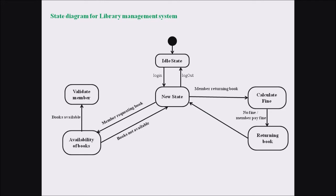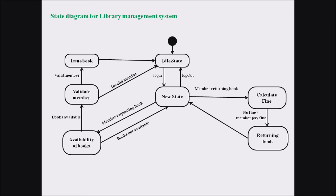If the books are available, the person moves to the validate member state. If the member is valid, they can borrow the book. If the person has invalid membership, the process ends by moving towards the idle state. If the member is valid, they move to the issue book state, and finally back to the idle state, from which the final state is reached.